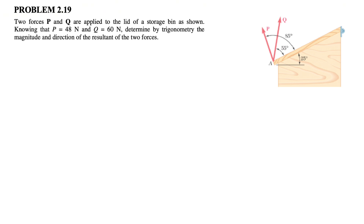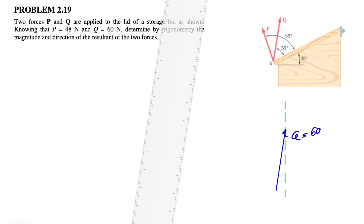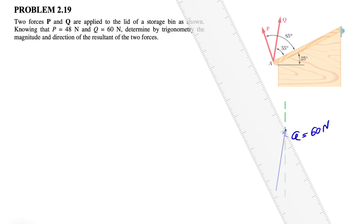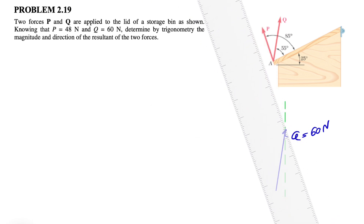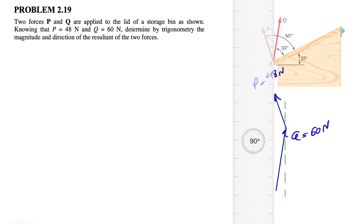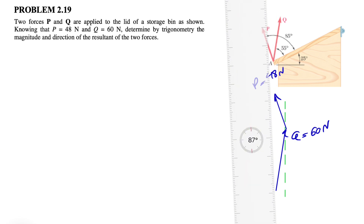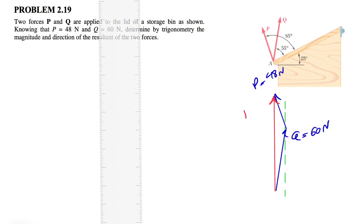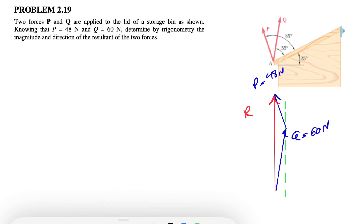We need to determine by trigonometry the magnitude and direction of the resultant of these two forces. Using the triangle rule to find the resultant, we have force Q which is 60 newtons, and if we draw a line parallel to force P, that gives us force P at 48 newtons. The vector connecting the tail of the first to the head of the second is our resultant R.